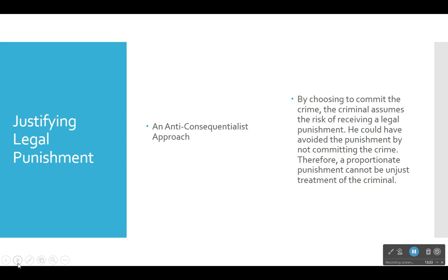We're talking about murder here — not other kinds of killing where the capacity to understand the gravity of what one is doing may be diminished, and not manslaughter or similar cases. The criminal understood the gravity of what he was doing, understood he was committing the worst, most heinous crime, and understands he is now deserving of the most severe punishment we have. By choosing to commit the crime, the criminal assumes the risk of receiving legal punishment; he could have avoided it by not committing the crime, so a proportionate punishment cannot be unjust treatment of the criminal.